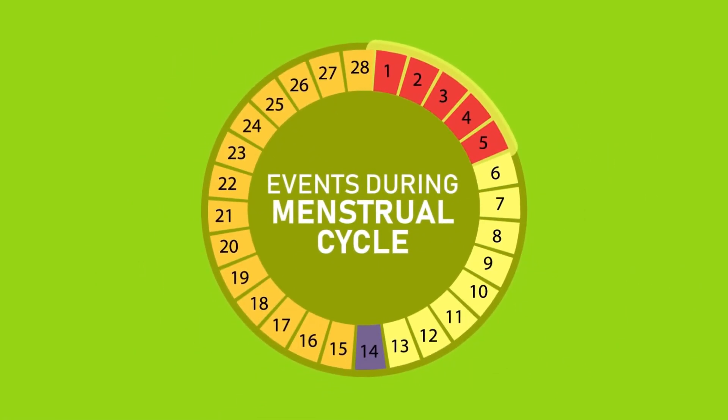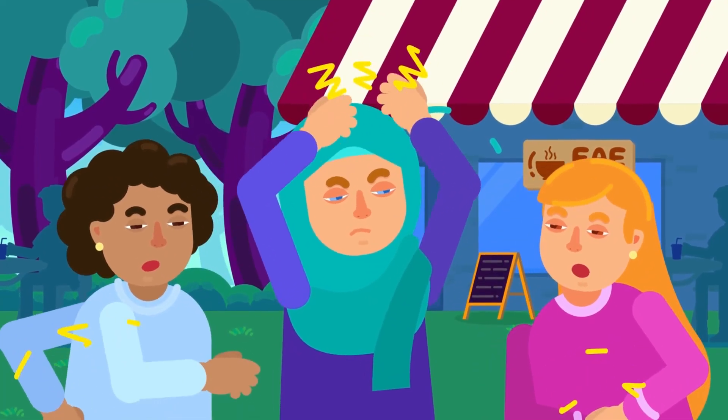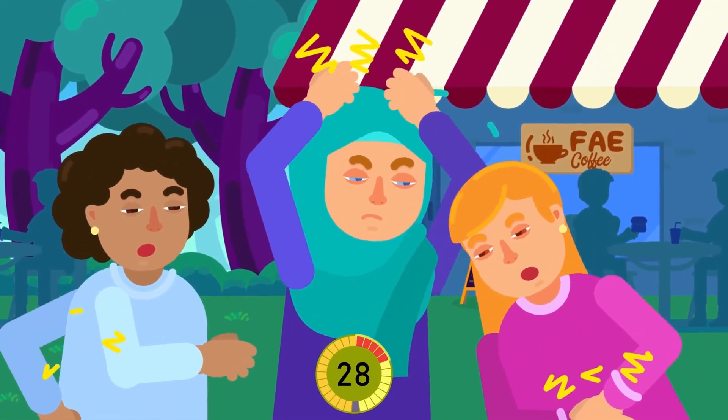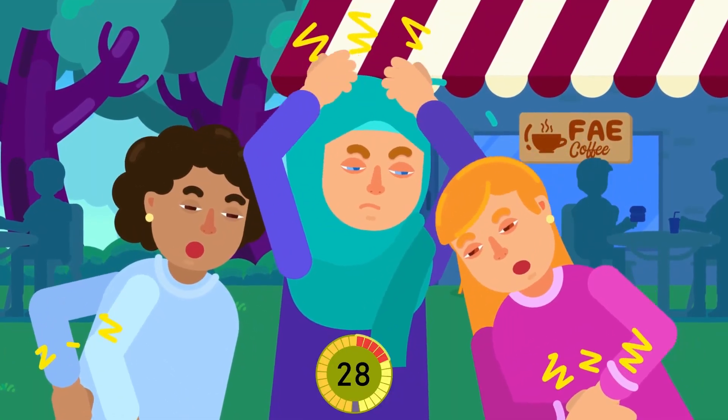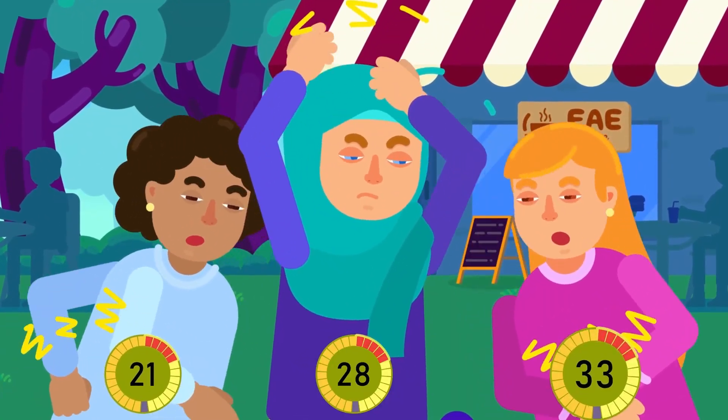Events during menstrual cycle. The menstrual cycle normally spans over 28 days. There is a natural variation in the length of this cycle, and it can range from 21 to 33 days.